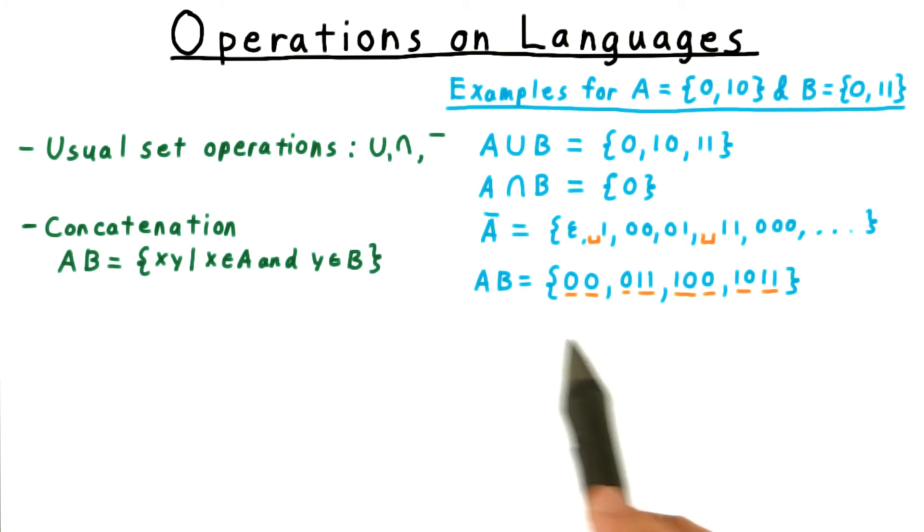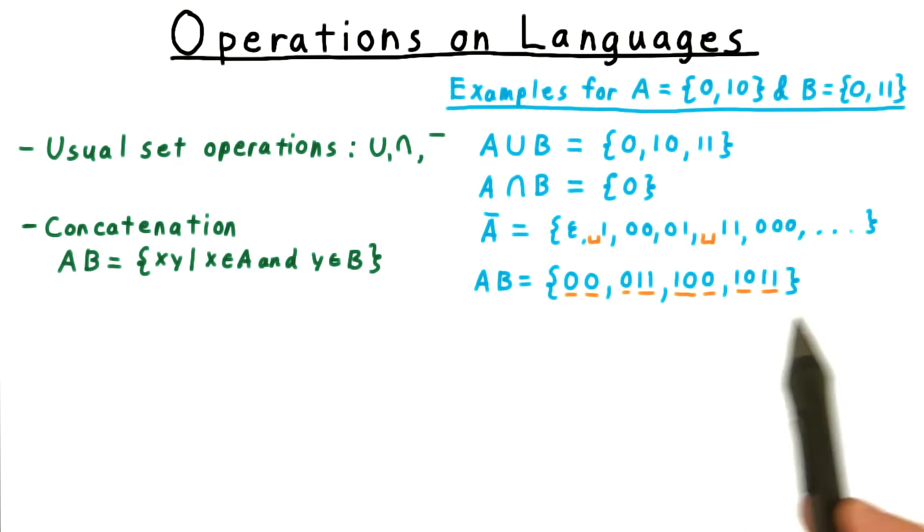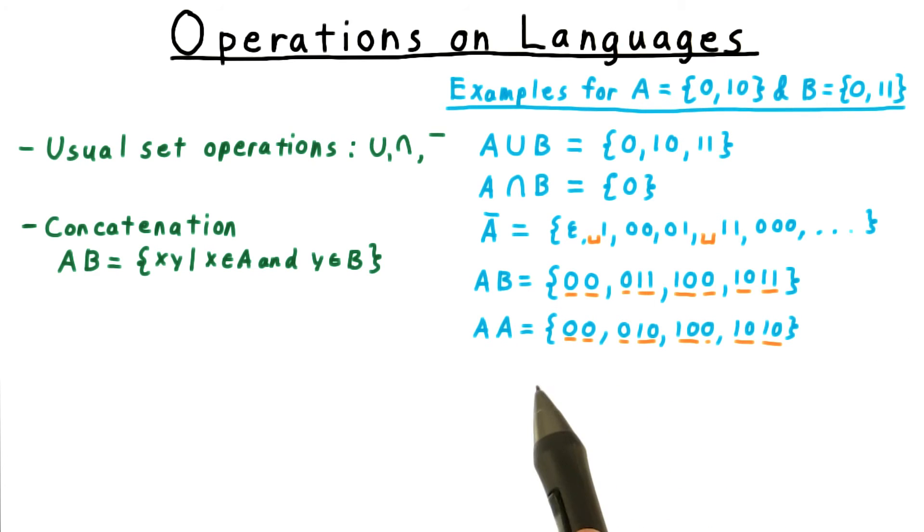In our examples, the set AB would be 00, the first 0 coming from A and the second from B; 011 with the 0 coming from A and the 11 coming from B, and so forth. Of course, we can also concatenate a language with itself, as I've done here in this example.